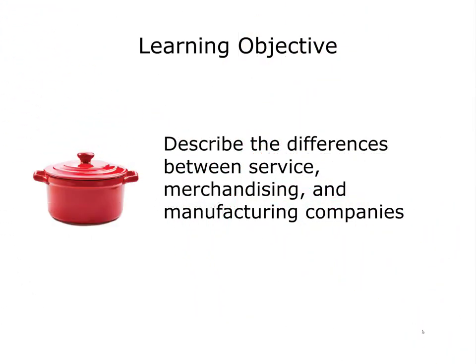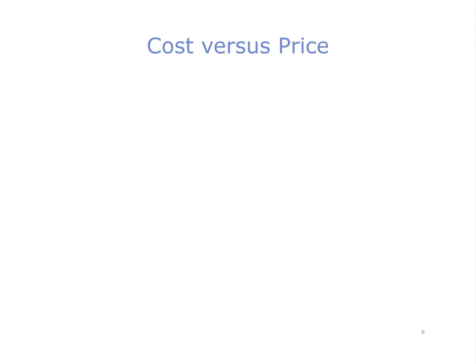The next learning objective is to describe the differences between service, merchandising, and manufacturing companies. Before we go further, let's go over some simple but critical vocabulary: cost versus price.